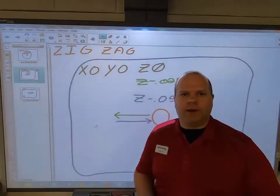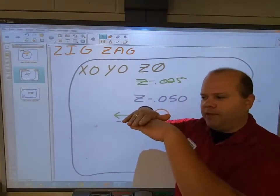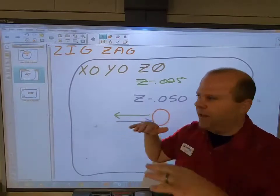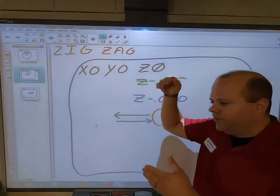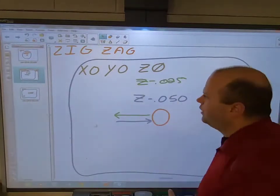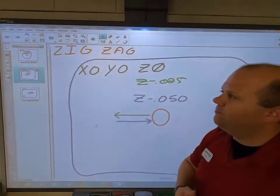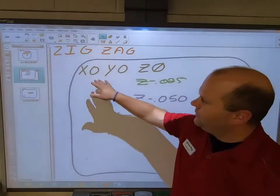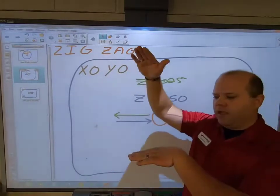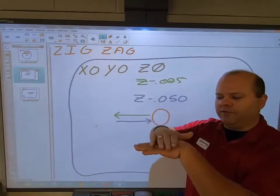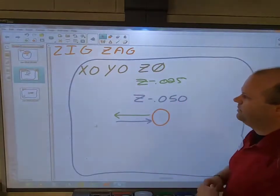With pocketing it's a little bit different. I'm actually going to come down to the face of my material and then have to go into the pocket to create it. I can't go straight down — I can't plunge into the material. It's not good for the tool, it's not good for the machine. So what I have here is my zigzag method. I'm going to X0 Y0 Z0, the center of my part, coming down to the face of my material.